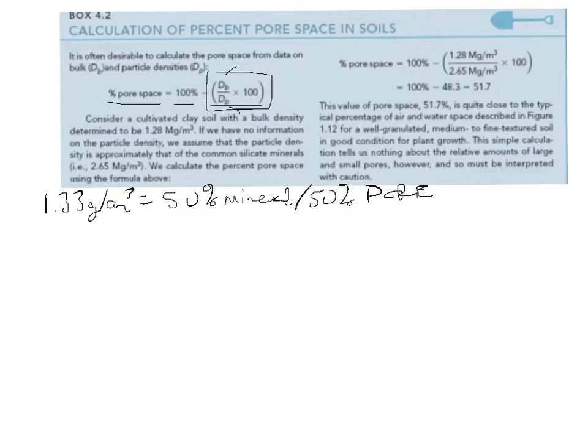So we'll end up with a percentage that is our pore percentage. In this example, we went out to the field, we measured this, and we've got 1.28 megagrams per cubic meter—that's our bulk density.